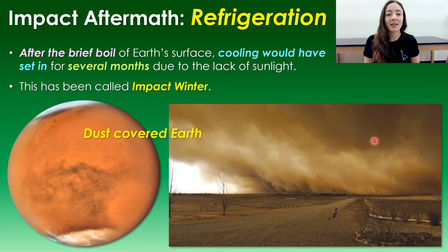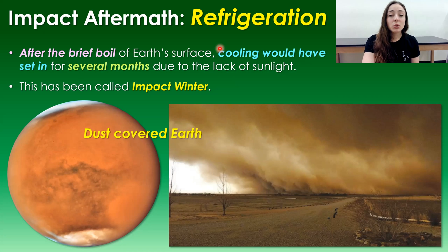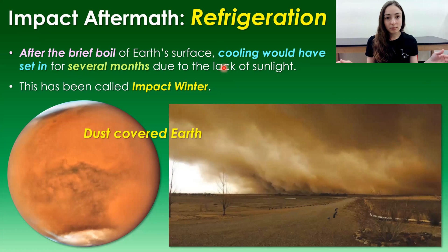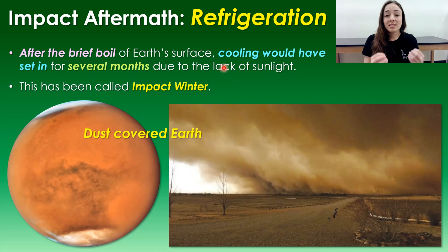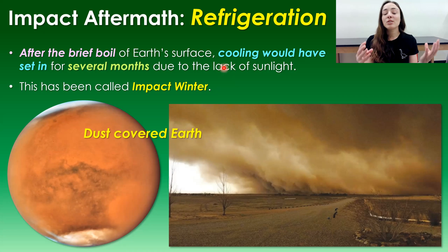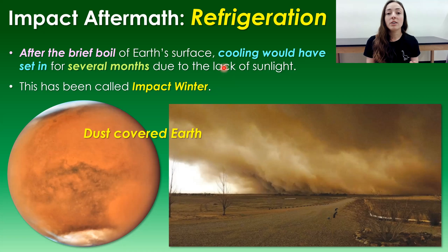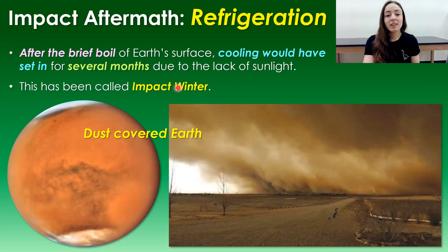However, heat wasn't the only thing devastating environments on Earth. After the brief boil event, cooling would have set in for several months due to the lack of sunlight being blocked by dust and aerosols. Microspherials and larger rock fragments settled and reentered causing the boil, but smaller particles like dust and aerosols stayed and blocked sunlight for a longer period. This caused several months of lack of sunlight, leading to what's called the impact winter — a major cooling period.